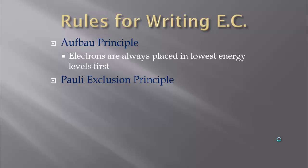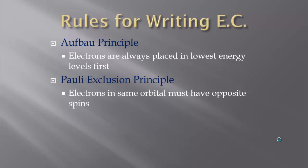Then we have the Pauli Exclusion Principle. This says that electrons in the same orbital must have opposite spins. Each orbital can hold up to two electrons, and as they spin, they create opposite magnetic fields. Because they have opposite fields, they can occupy the same space. So we just have to make sure when we draw them in that the electrons have opposite spins, and we'll show that with arrows later.